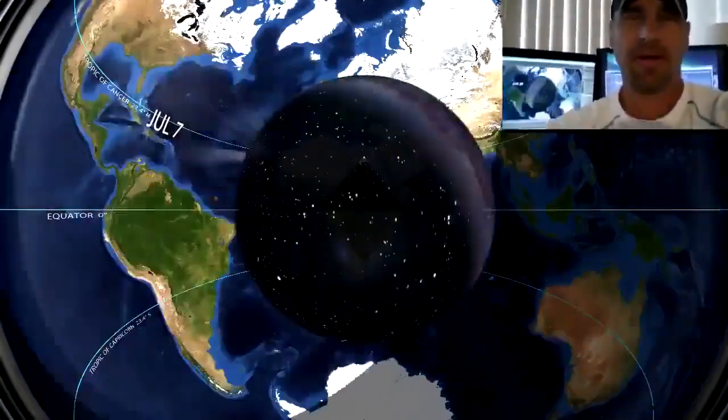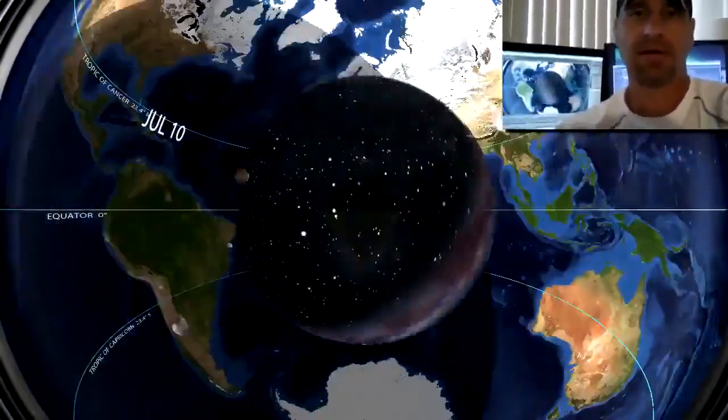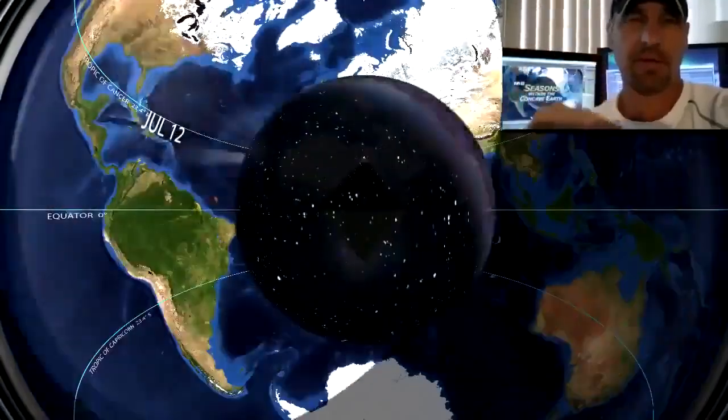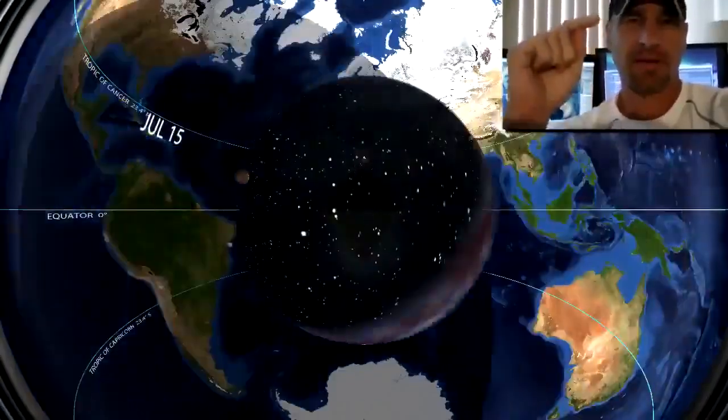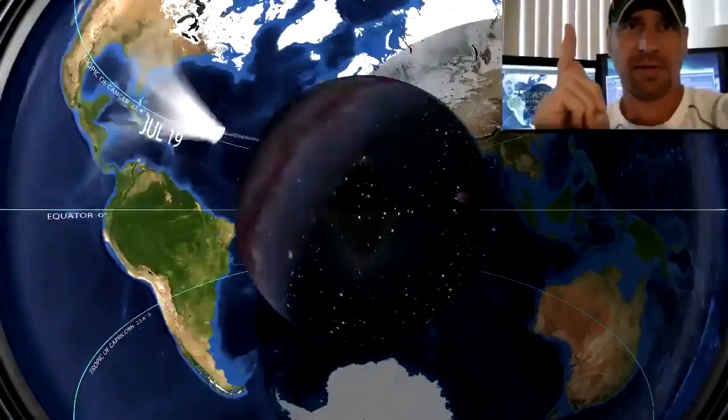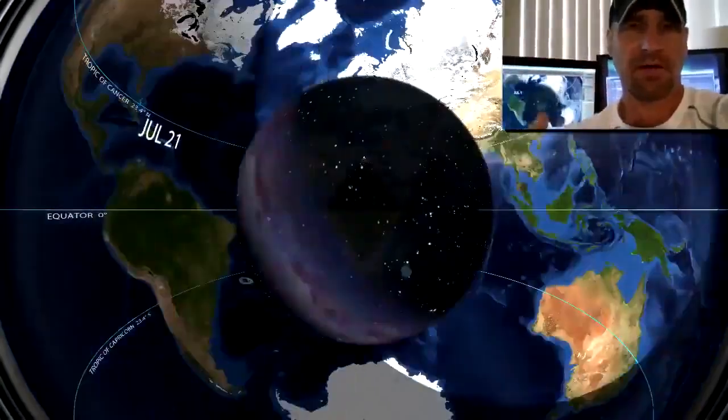Seasons within the concave Earth. I animate the Sun oscillating around the celestial sphere every six months, so when it's in the Tropic of Cancer, you'll notice that you get 24 hours of daylight at the North Pole and 24 hours of darkness on the South Pole.